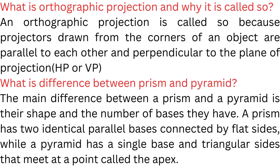What is the difference between a prism and a pyramid? The main difference is their shape and the number of bases. A prism has two identical parallel bases connected by flat sides, while a pyramid has a single base and triangular sides that meet at a point called the apex.